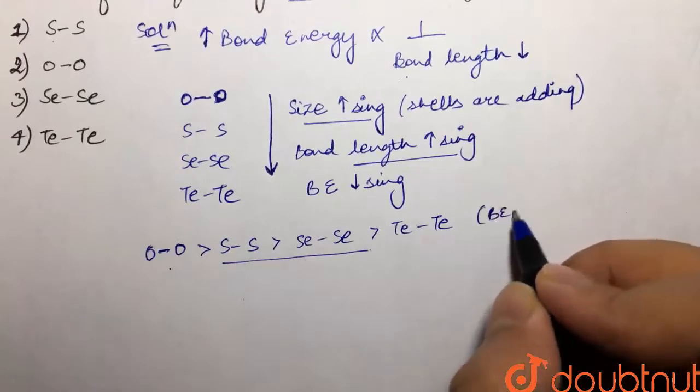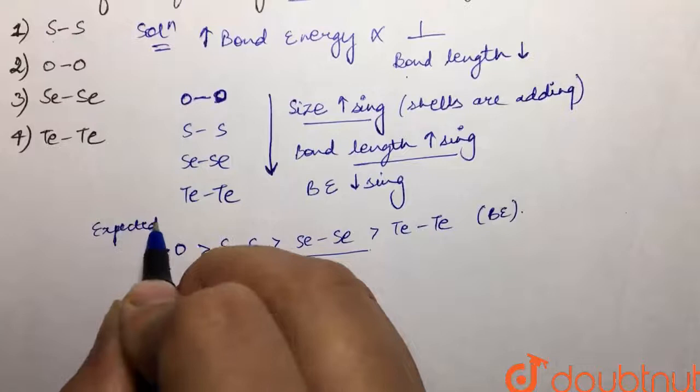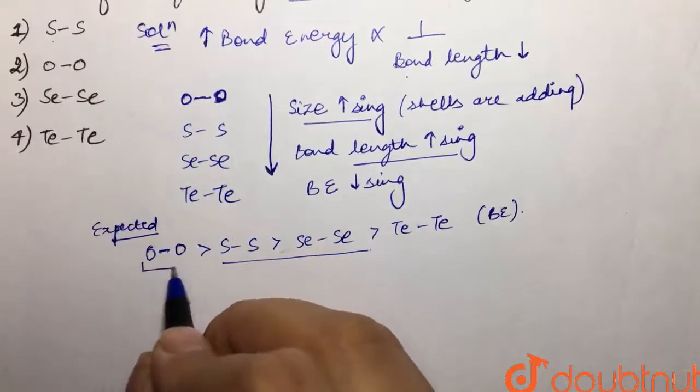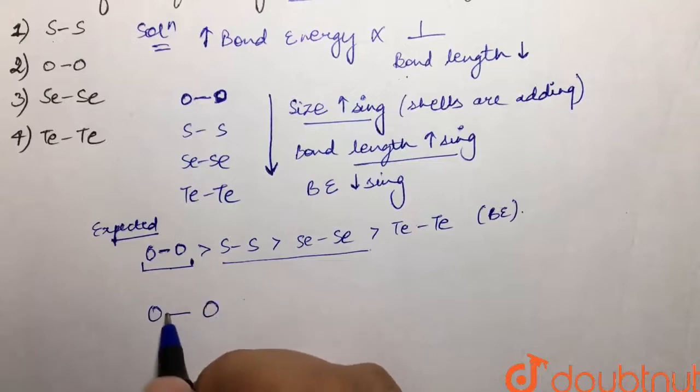this is what we have written - the bond energy order - but this is not correct. This is only the expected order. Why? Because what happens in case of oxygen is that the oxygen-oxygen bond length is expected to be the smallest, but it is not, due to inter-electronic repulsions.